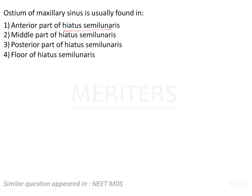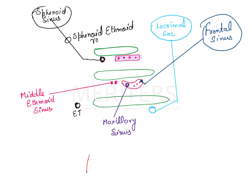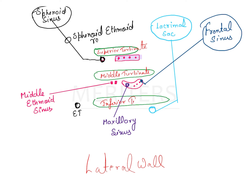I will give you an overview of the lateral wall of the nose. In the lateral wall of the nose, there are three turbinates. The uppermost is known as the superior turbinate or superior concha, the middle one is the middle concha or turbinate, and then we have the inferior turbinate.